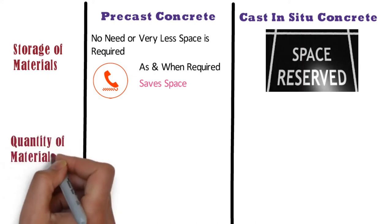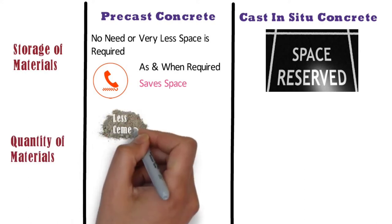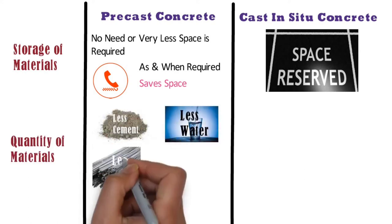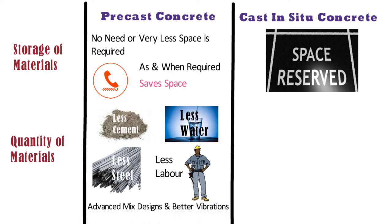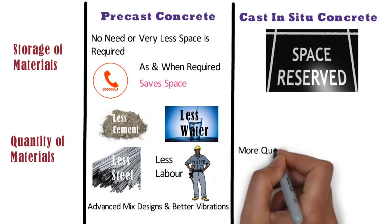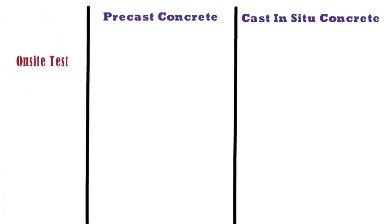Compared to the cast in situ method, the precast method uses less cement, less water, less steel, and less labour as it is factory made. For production of precast concrete, advanced mix designs and better vibration are used. Whereas in case of the cast in situ method, more quantity of materials is required.